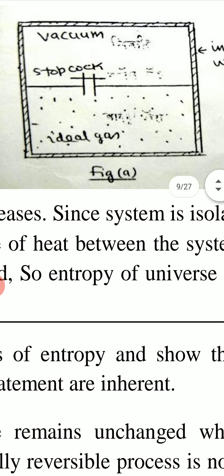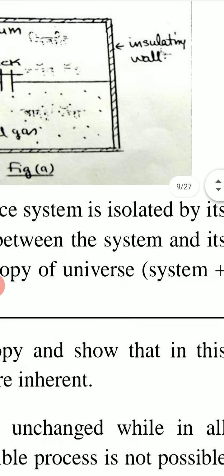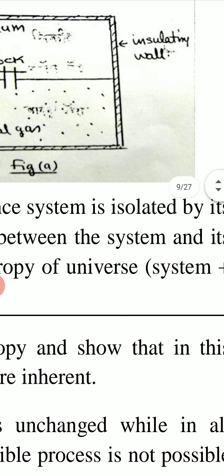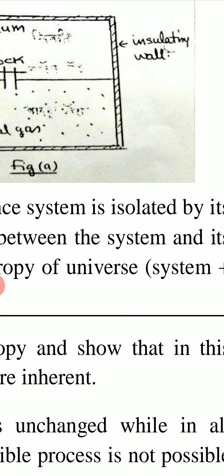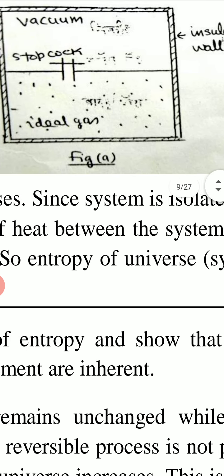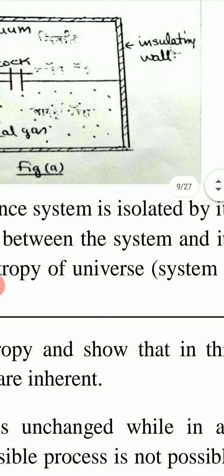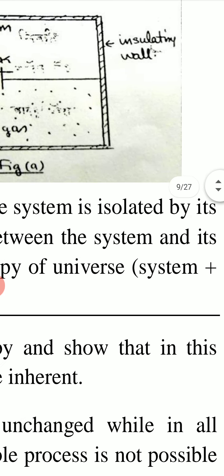Entropy of the system increases in this process of free adiabatic expansion. Since the system and surroundings are separated by insulating walls, there is no exchange of heat, so dq = 0 and dS = 0 for the surroundings. Thus entropy of the surroundings does not change, and the total entropy of the universe increases — confirming this is an irreversible process.